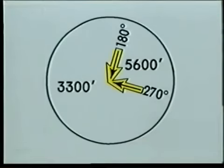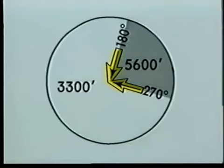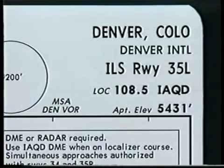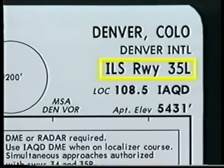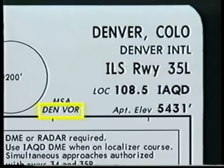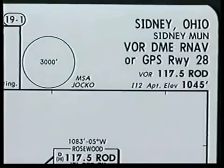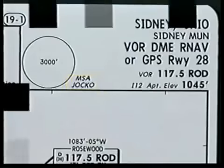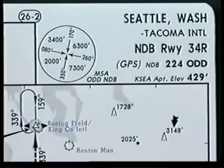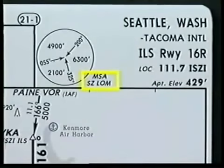The altitude shown in each sector provides a minimum of 1,000 feet of obstacle clearance within a 25 nautical mile radius of the navigation facility listed below the circle. If the normal 25-mile radius does not apply, it is noted below the navigation facility identifier. Notice that the sectors are formed by magnetic bearings to the station. In this example, the northeast sector is formed between the 180 and 270 degree bearings. There are two things to remember about MSAs. First, if the navigation facility for the approach does not provide full azimuth reference information, such as an ILS, the minimum safe altitudes may be based on the primary omnidirectional facility in the area. In the case of current RNAV approaches, MSAs are predicated on an RNAV waypoint, which is usually the missed approach waypoint. The second consideration is that the MSAs may be different for each approach at the same airport, because the approaches themselves may use different facilities.